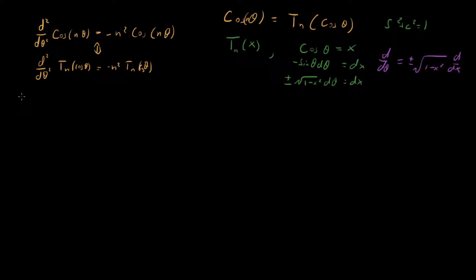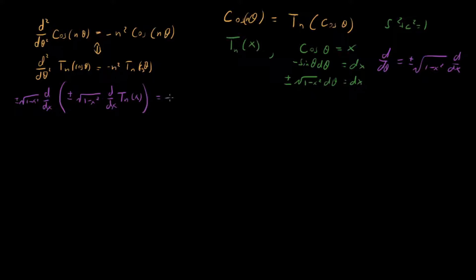So plugging that in, what we see is that we're going to have root one-minus-x-squared d/dx — that's our first application — and then a second application: root one-minus-x-squared d/dx acting on our Chebyshev polynomial T_n of x. This whole thing equals minus n-squared T sub n of x. The weird plus-or-minus shows up twice so they cancel out to plus one.